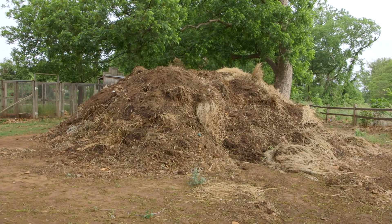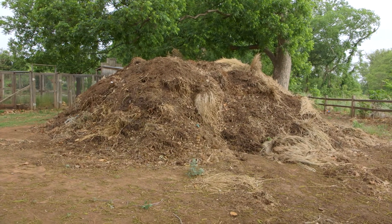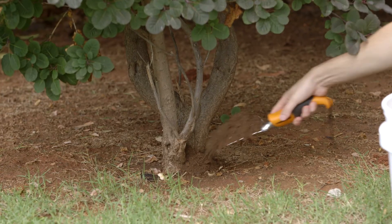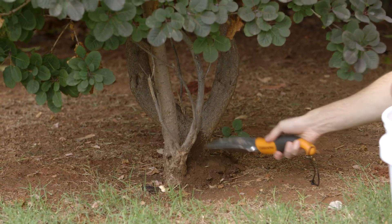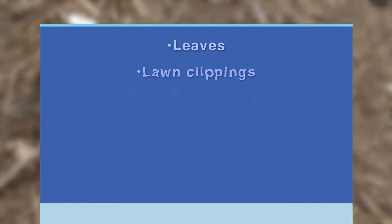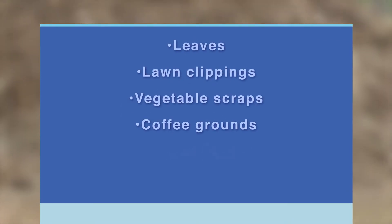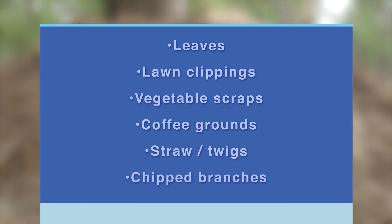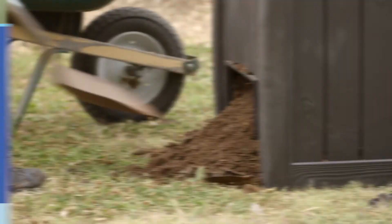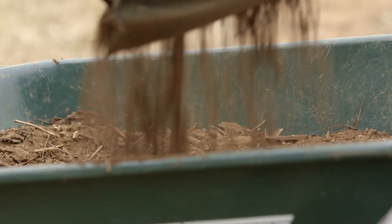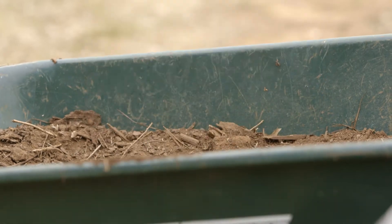Every soil type can benefit from the addition of organic matter. Organic matter adds nutrients and increases water holding capacity. Examples include leaves, lawn clippings, vegetable scraps, coffee grounds, straw, and twigs or chipped branches. You can also use a compost bin or dig small trenches where you bury your soil amendments.